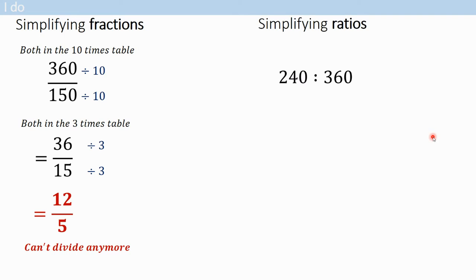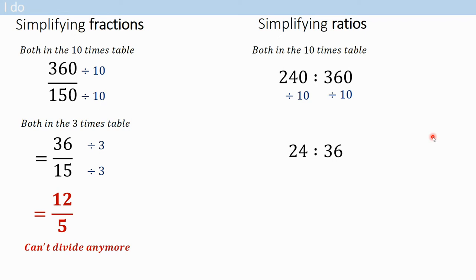Exactly the same steps again - what times table will they both be in, and how do you know? They end in a zero, so divide them both by 10. What times table are 24 and 36 in? There are a few ways to do this - they're both in the twos, the threes, the sixes, and the twelves. You could keep dividing until you can't go any further, but I'm going to divide them both by 12 because it's the highest common factor. Dividing by the highest common factor makes your steps shorter.